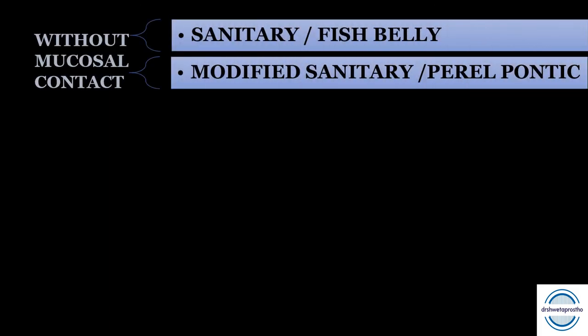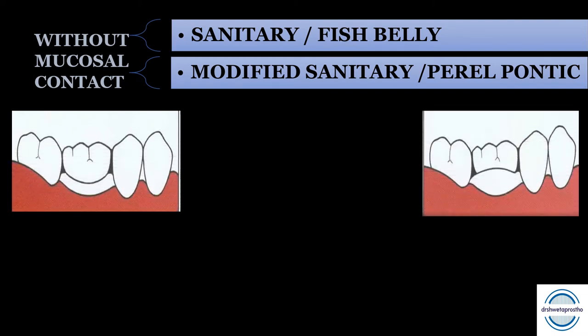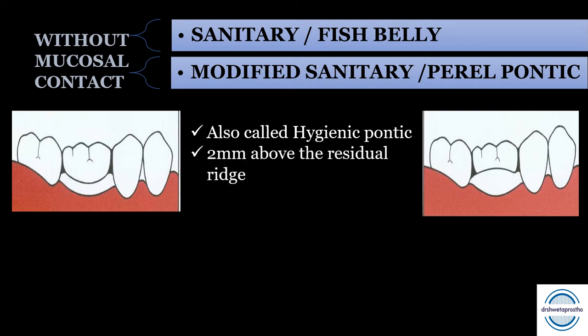Pontics without mucosal contact come in two types: the sanitary or fish-belly pontic, and the modified sanitary or peril pontic. They are also called hygienic pontics because they have no contact with the edentulous ridge — they are kept 2 mm above the residual ridge. This gap makes them easy to maintain and clean.